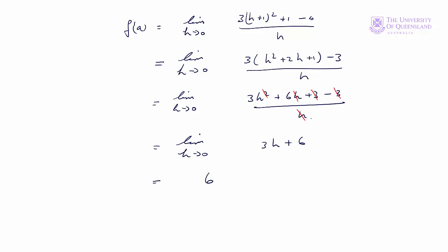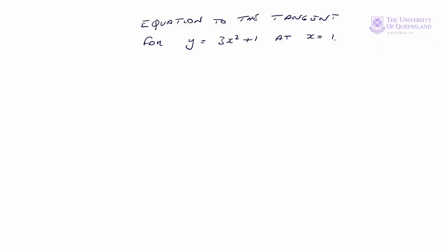So we've shown the derivative of our function at x equals 1 is 6. Let's now look at the equation to the tangent at x equals 1. We've got the equation to the tangent for our function y equals 3x squared plus 1 at x equals 1.